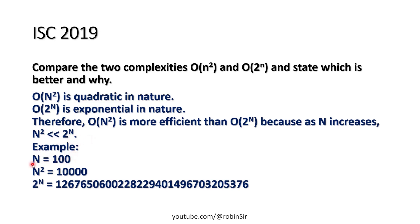For example, if you take N as 100, then N squared is 10,000. But 2 to the power N, or you can say 2 to the power 100, is a huge number. So we can clearly understand that quadratic complexity is much more efficient than exponential complexity.